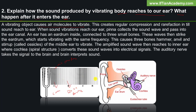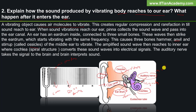When sound vibrations reach our ear, the pinna collects the sound wave and passes it into the ear canal. An ear has an eardrum inside, connected to three small bones. These waves then strike the eardrum, which starts vibrating with the same frequency. This causes three bones — hammer, anvil, and stirrup, also called ossicles of the middle ear — to vibrate. The amplified sound wave then reaches the inner ear, where the cochlea, a spiral structure, converts these sound waves into electrical signals. The auditory nerve takes the signal to the brain, and the brain interprets sound.